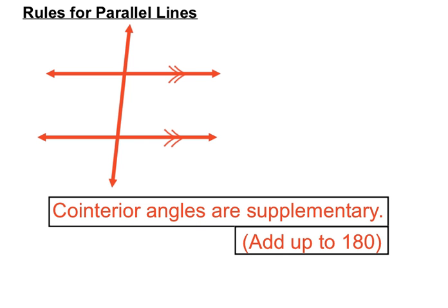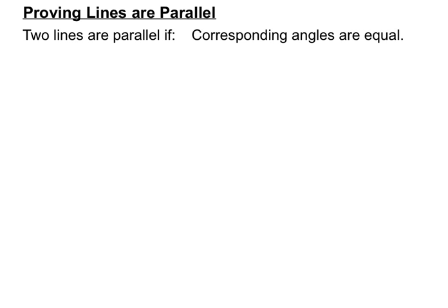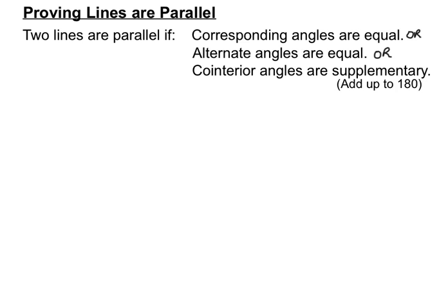Now, in these diagrams we've been given the symbols to prove that they are parallel — starting from a position where the lines are definitely parallel and making relationship statements. But we can turn this on its head and use those three relationships to prove that lines are parallel. Two lines are parallel if corresponding angles are equal, or if alternate angles are equal, or if co-interior angles are supplementary — adding up to 180 degrees. If one of those three conditions is met, we can prove that those two lines are parallel. Let's look at some examples.